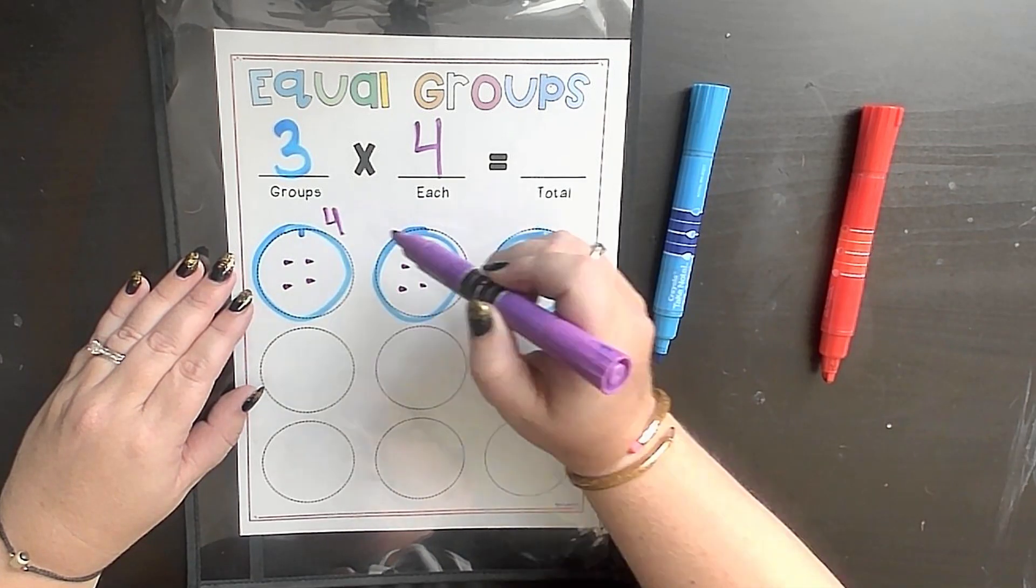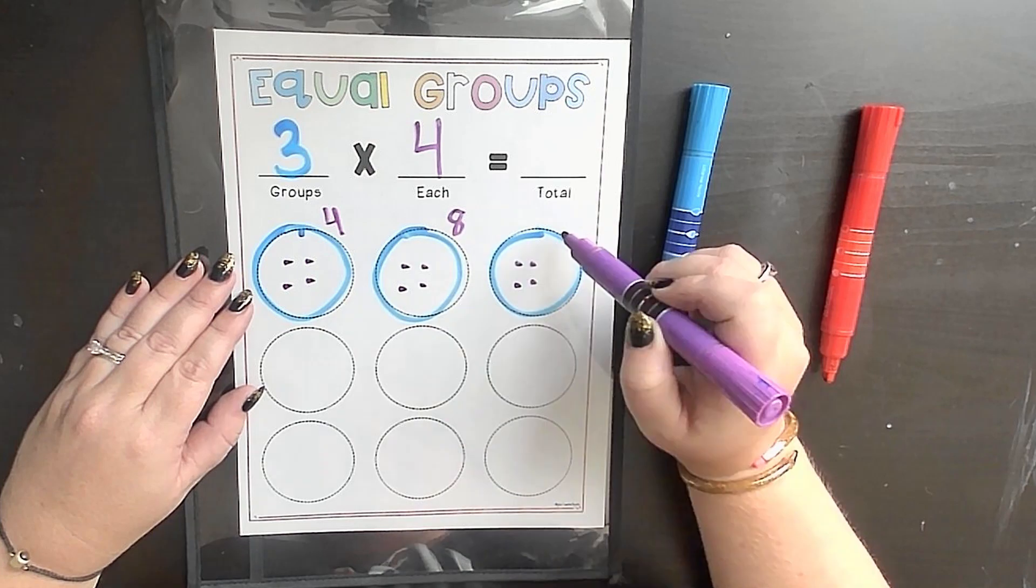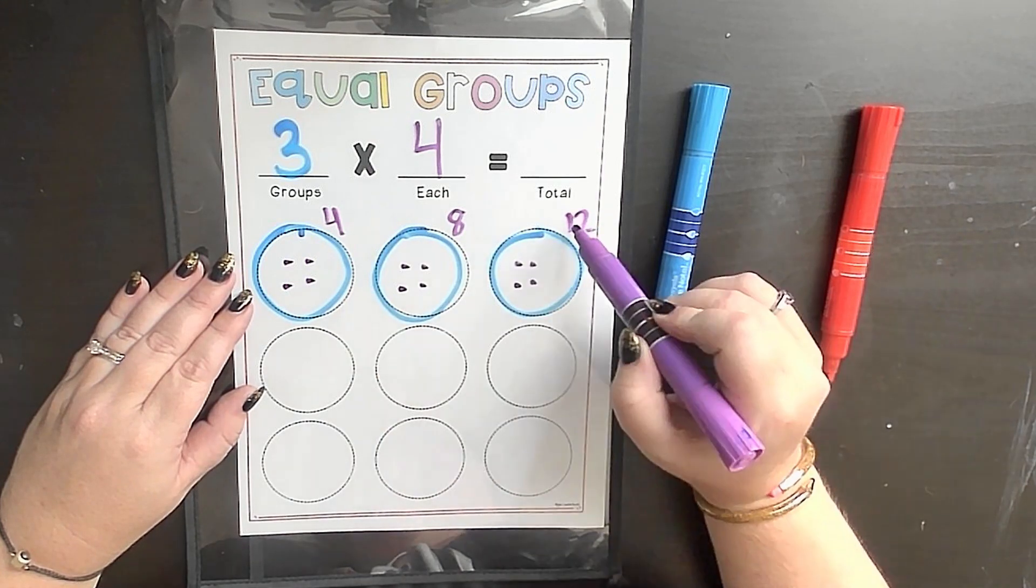I can go 1, 2, 3, 4, 5, 6, 7, 8, 9, 10, 11, 12, modeling my skip counting as I go.